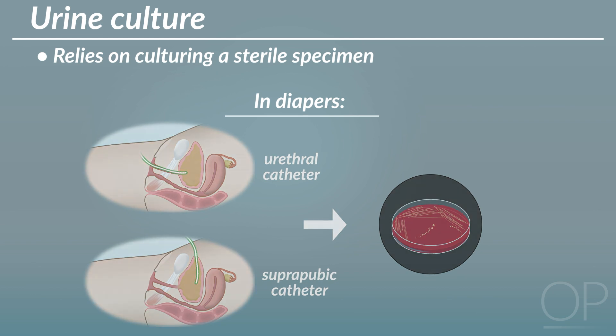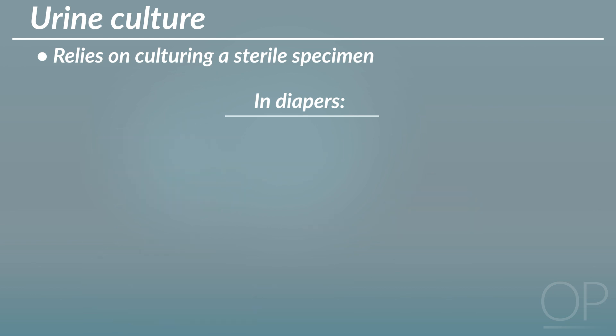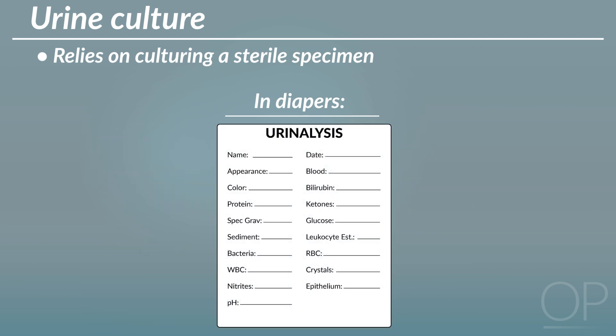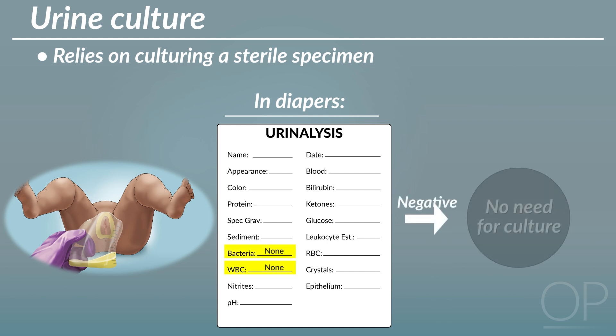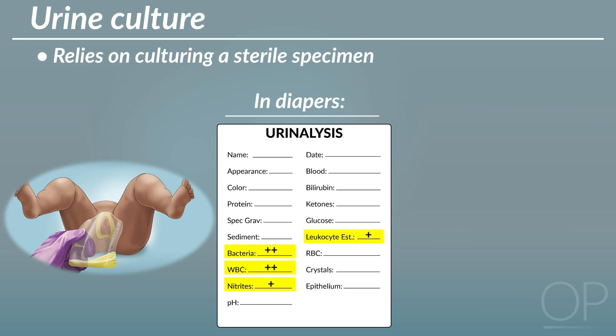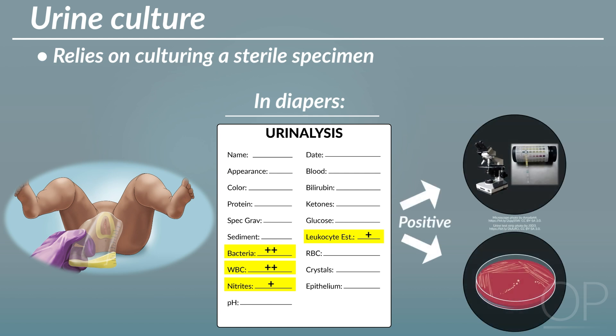In many cases, catheterization can be avoided if there is no evidence of a UTI on urinalysis. Urinalysis is first performed on urine collected from a bag placed around the urethra. If the urinalysis is negative without bacteriuria or pyuria, there is no need to send a culture. If there are any concerning findings on the urinalysis, a second step of sending a catheterized specimen for urinalysis and urine culture is necessary.